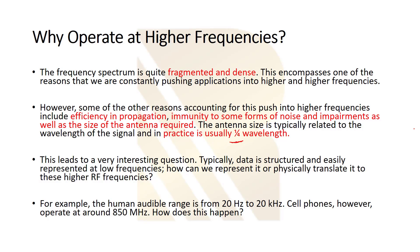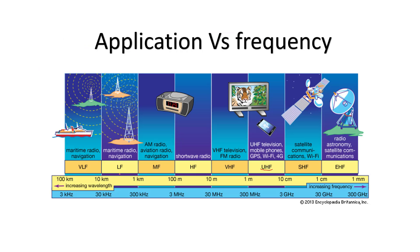One of the most important questions that comes to everybody's mind is why we have to operate in high frequencies. We are trying to answer this question. First of all, the frequency spectrum is quite fragmented and dense. As you see here, in this frequency range, we have lots of applications. In the past, we didn't have these applications. We only had radio and maritime and stuff like this, and it ended in 30 MHz. So we didn't really need to go to really high frequency. But one of the reasons that we have to increase the frequency is this frequency range is already allocated to different applications. We don't have any space here.